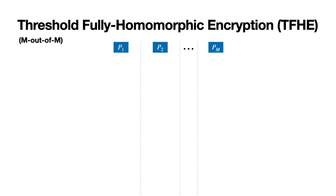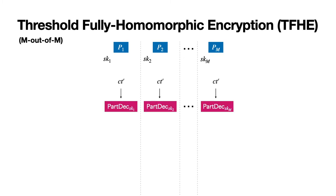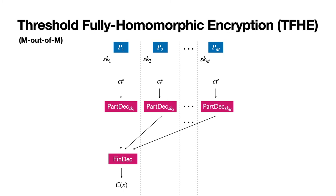For our purposes, we're going to use a variant of FHE called threshold FHE, where decryption privileges are shared among m parties. Each party has a decryption key share, and when all the parties collectively want to decrypt some message, they perform a decryption phase: first, the parties run the partial decryption algorithm with the ciphertext and their share; then the parties combine the partial decryptions using the final decryption algorithm, which reveals the output. For security, all parties have to agree to decrypt in order for the message to be revealed, and if one party withholds its partial decryption, the message is hidden. We'll call this m-out-of-m TFHE.